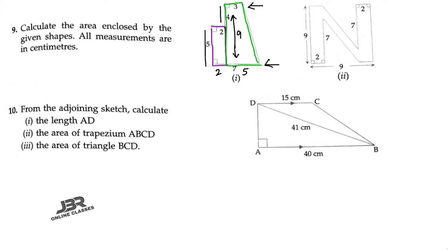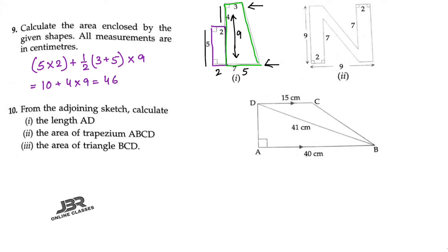For the rectangle, length equals 5 and breadth equals 2. So the area of the first diagram is: 5 × 2 plus half × (3 + 5) × 9. That gives 10 plus half × 8 = 4, so 4 × 9 = 36. The total is 10 + 36 = 46. So 46 centimeter square is your answer.